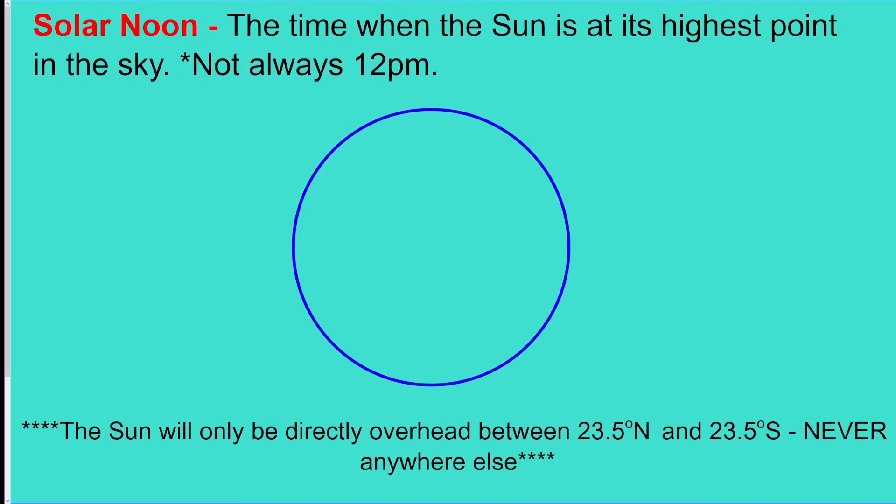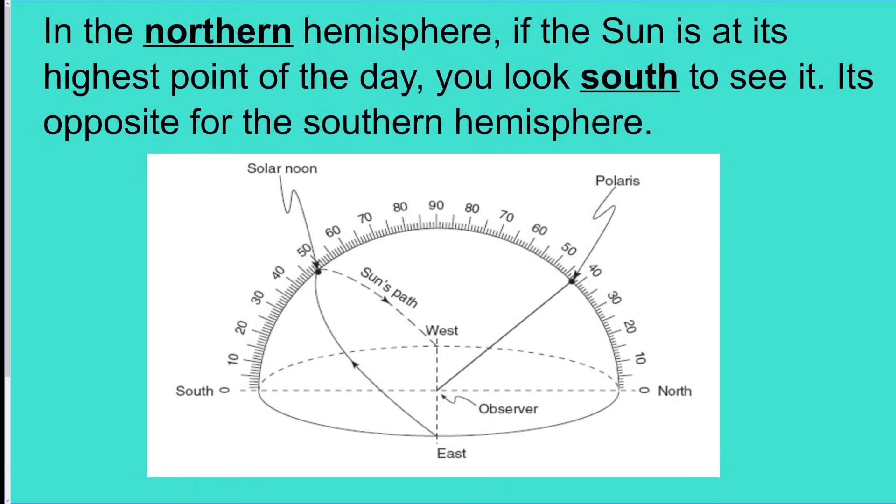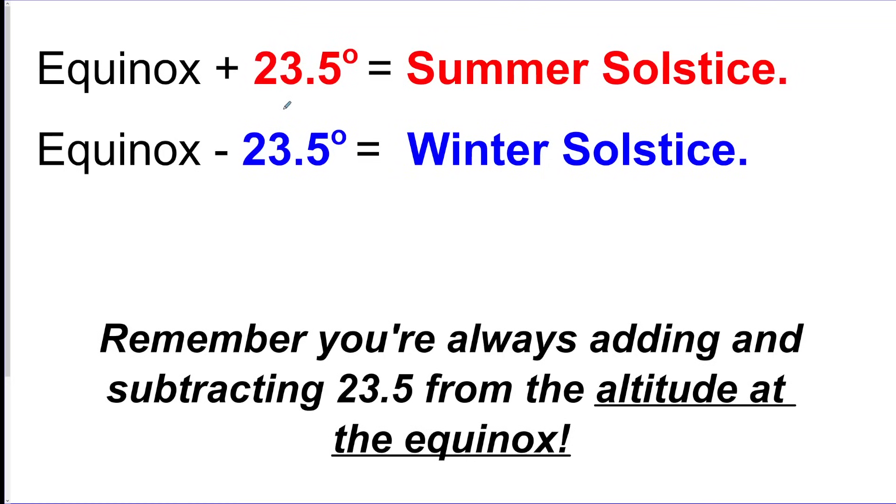You should know what the zenith is. It's the point directly above the observer's head. Solar noon is when the Sun is at its highest point in the sky. It does not have to be 12 p.m., okay? It's just whatever time the Sun's at the highest point. In the northern hemisphere you always have to look south to see the Sun at solar noon. So this is specifically at solar noon, the Sun will always be south. And in the southern hemisphere you have to look north. Between seasons the Sun's height is going to change by 23 and a half degrees because that's the tilt of the Earth.